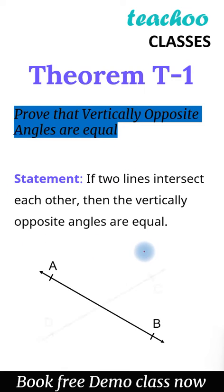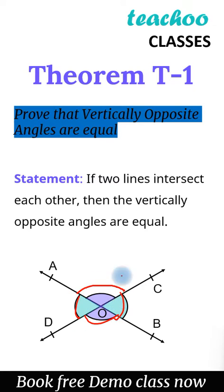So we know that when two lines intersect each other, the vertically opposite angles formed are equal. That means this angle is equal to this angle, and this angle is equal to this angle. So let's learn how to prove this.